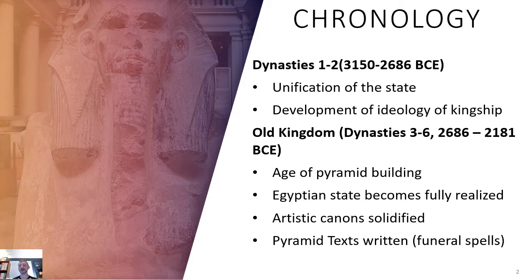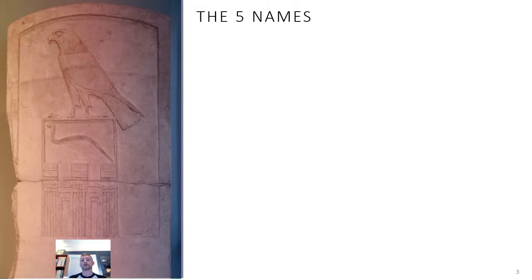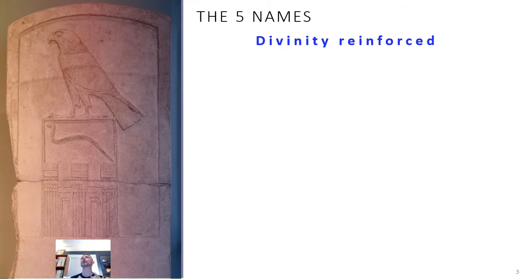There's a series of pyramid texts written in this period. We'll probably read the most famous — the so-called Cannibal Hymn — which are funerary texts important to the Egyptians and to the ideology of kingship. Moving on to the names: I like to think of these names as reinforcements of divinity — the idea of pharaoh as the divine representation of Horus on earth and Osiris in death, reinforced through these names.